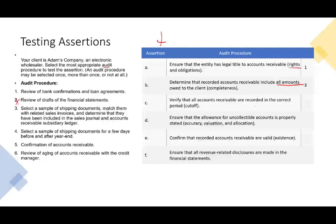Verify that all accounts receivable are recorded in the correct period — which is the cutoff assertion. The risk is that toward the end of the period, sales or accounts receivable could be recognized prematurely, or deferred to a later period. To test cutoff, you look at documents near year-end to find out when items were shipped, when the sale took place, and when it was recorded. Selecting a sample of shipping documents for a few days before and after year-end — option four — satisfies the cutoff assertion.